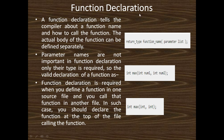Now I describe function declarations, which means the function prototype. There is a return type, function name, and parameter list, terminated by a semicolon. A function declaration tells the compiler about a function name and how to call the function. The actual body of the function can be defined separately. Parameter names are not important in function declarations — only their type is required.